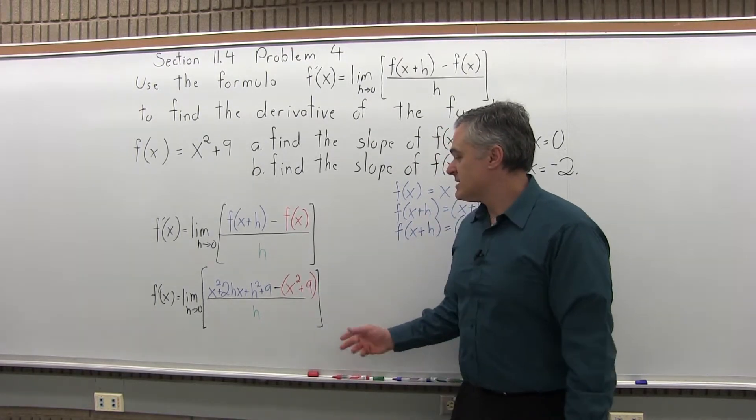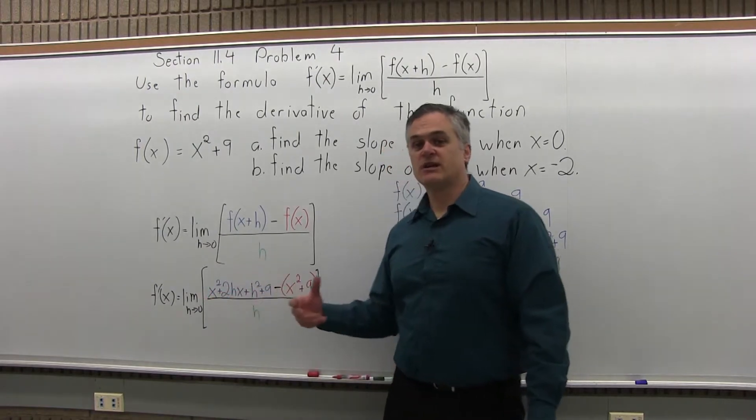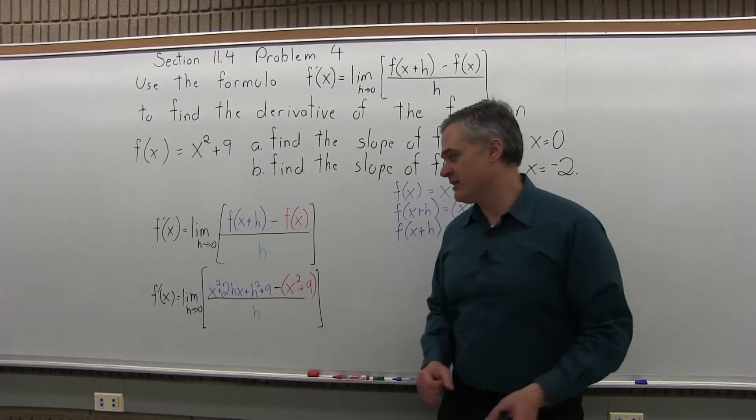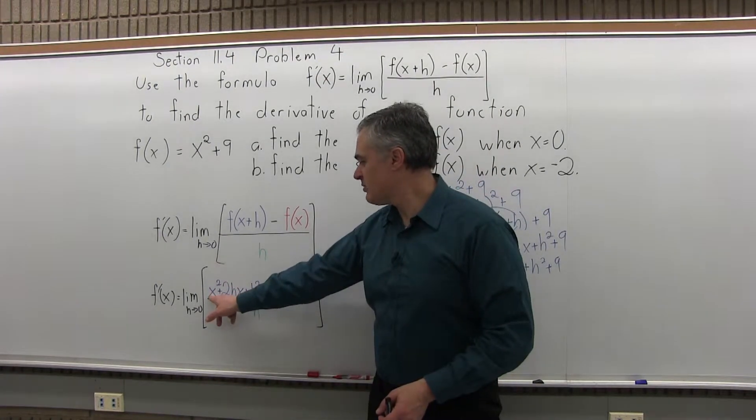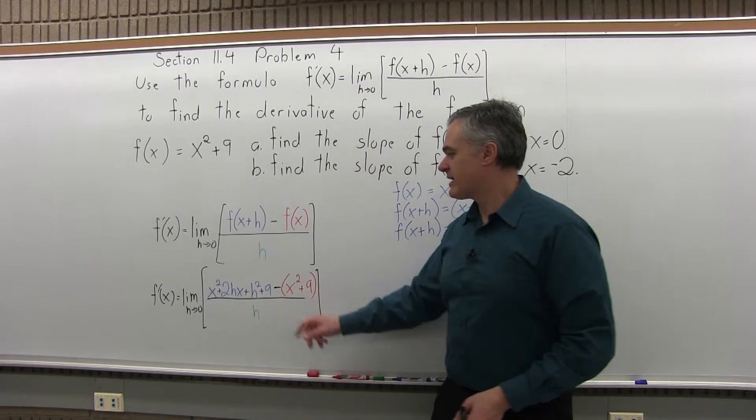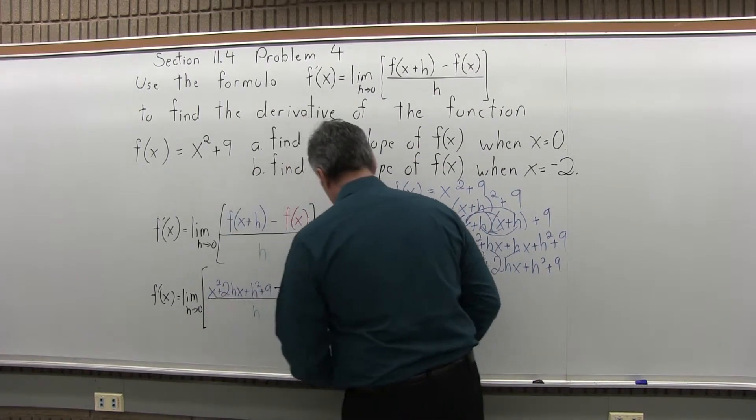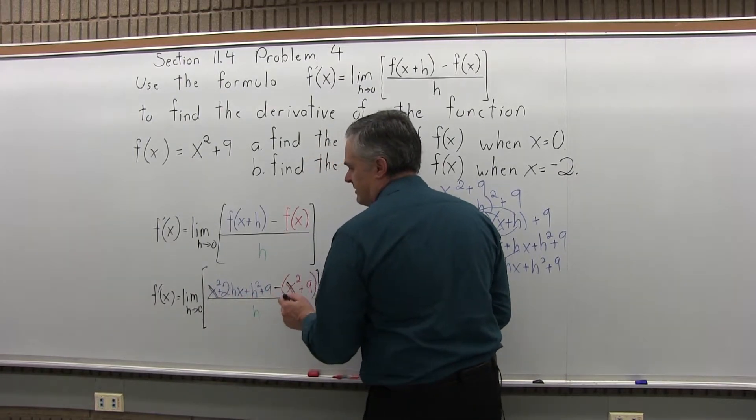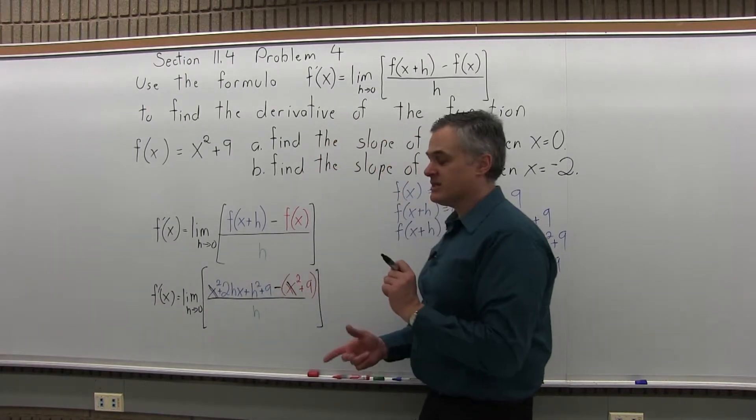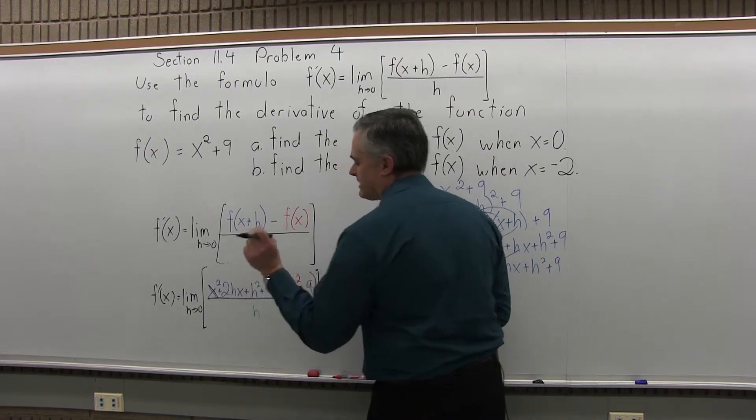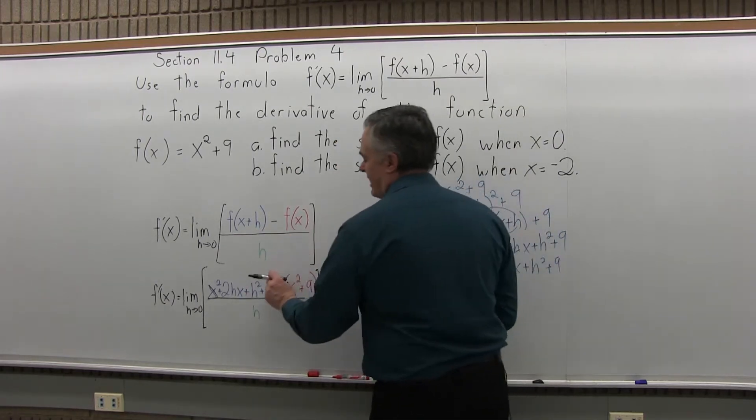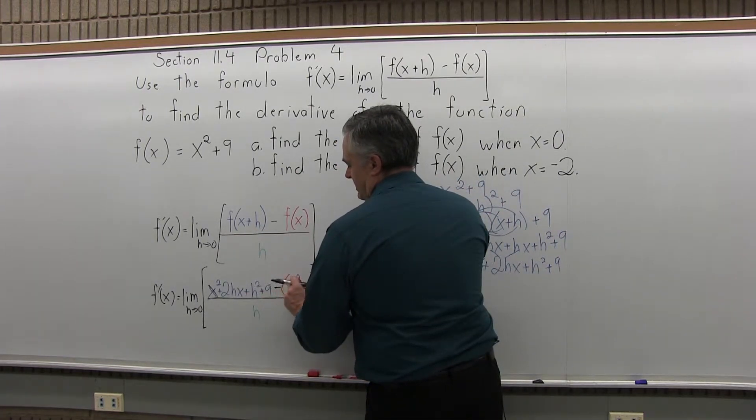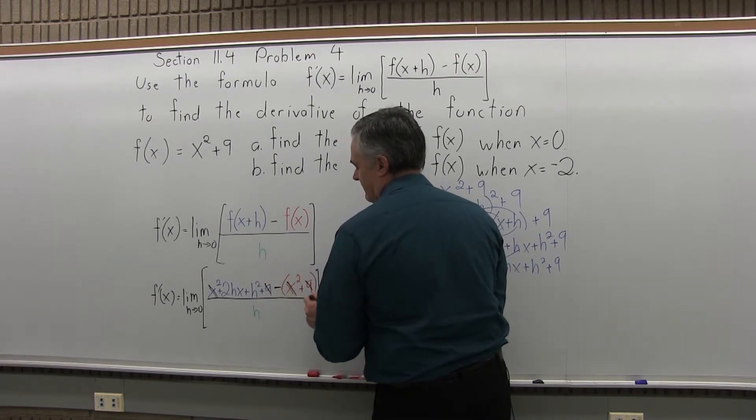What happens is, all the parts in the numerator that don't have an h should cancel. There should be a positive version and a negative version. Here's a positive x², here I'm subtracting an x². So x² and x² cancel. 2hx has an h, it can stay. h² has an h, it can stay. 9, no h, here's another 9 that's being subtracted. Positive 9, negative 9, it'll cancel.